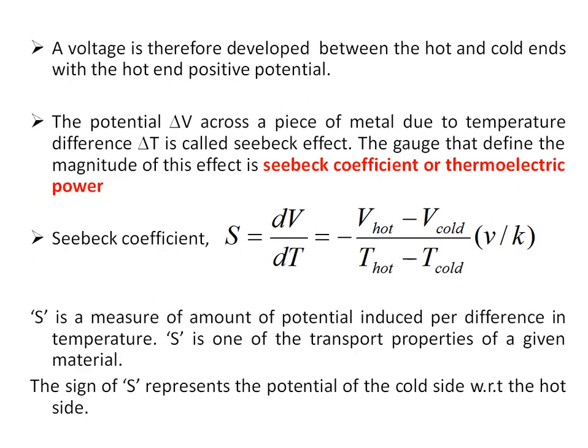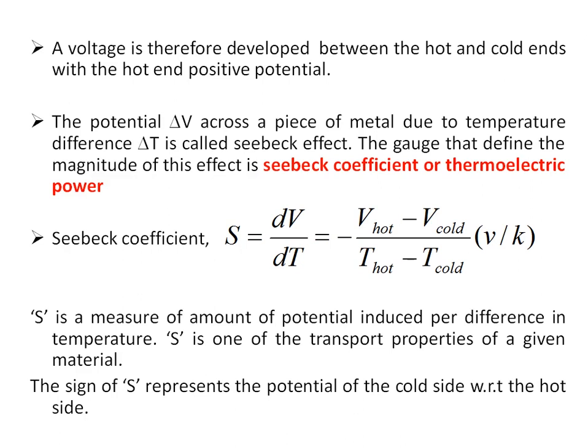The Seebeck coefficient S is given by S = dV/dT, or equivalently S = −(V_hot − V_cold) / (T_hot − T_cold), with units of volts per Kelvin. S is a measure of the amount of potential induced per degree of temperature difference, and it is one of the important transport properties of a given material. The sign of S represents the polarity of the cold side with respect to the hot side. For aluminum, the cold side is negative relative to the hot side, so S for aluminum is negative.